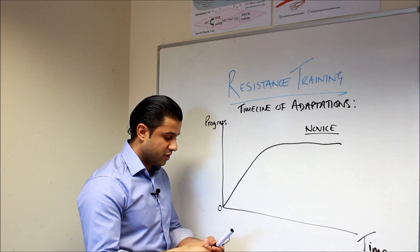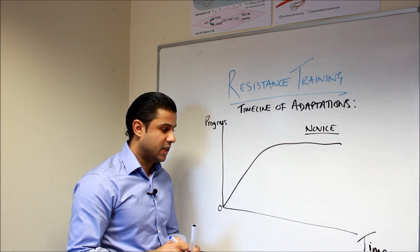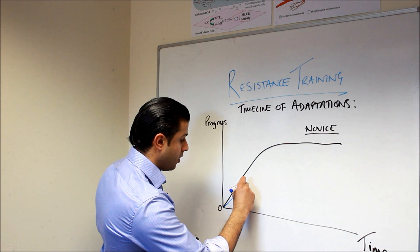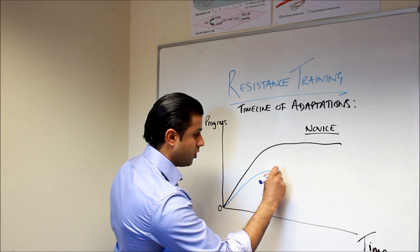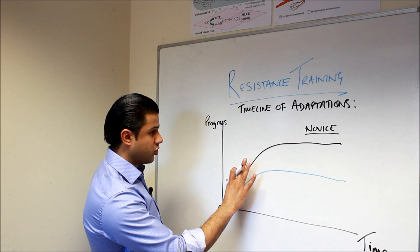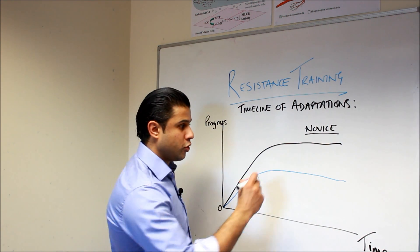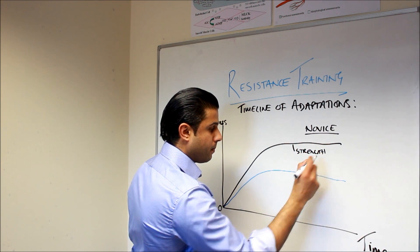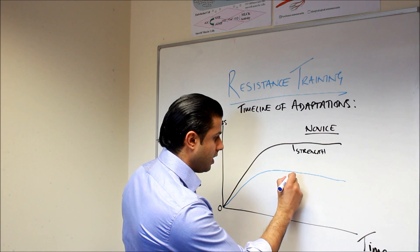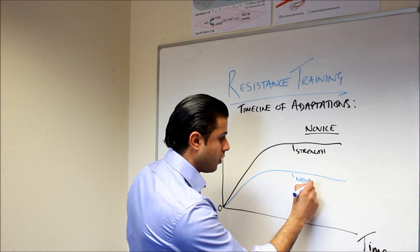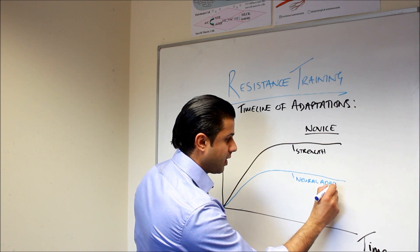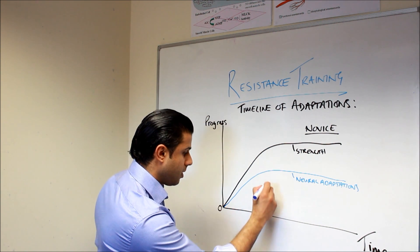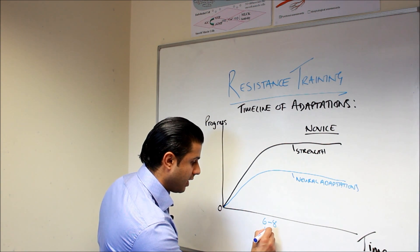And how that actually happens is that first we would see an increase or we would see changes in the neural adaptations occurring within the body. So an increase in strength is due to neural adaptation. This is exactly what's happening in the body in the first approximately six to eight weeks.